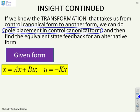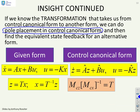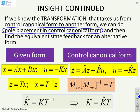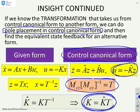In the given form: ẋ = Ax + Bu with u = -Kx. In the control canonical form: ż = Âz + B̂u with u = -K̂z. Because z = Tx, T is given by Mc_z times the inverse of Mc_x. We find K̂ in the canonical form, and then determine K as K = K̂ · T. So the design is done in the control canonical form and then mapped back to the original system.